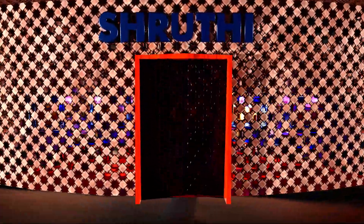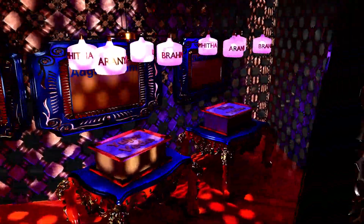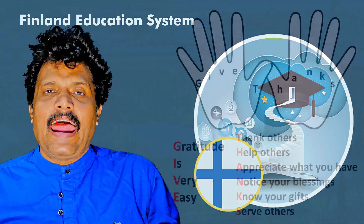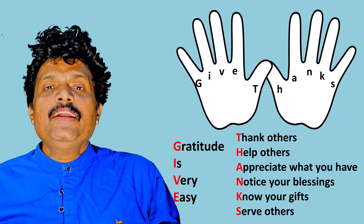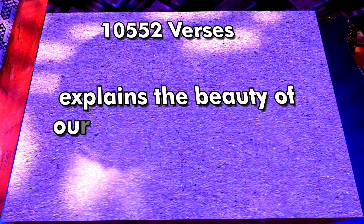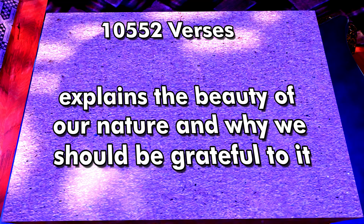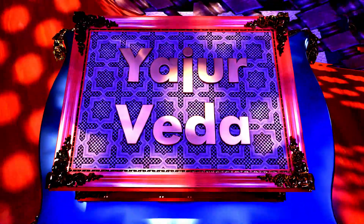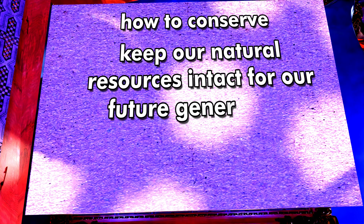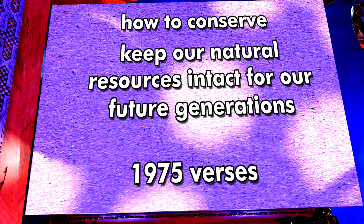The first part here is Shruti. It consists of four Vedas: Rig Veda, Yajur Veda, Sama Veda, and Atharva Veda. As we have understood from the Finland education system, education should start with gratitude — and this was not formulated by Finland. Finland got this idea from our knowledge system, the Rig Veda. Rig means appreciate, and it has 10,552 verses which explain the beauty of our nature and why we should be grateful to it. The second is Yajur Veda, where Yajur means conserve — it is also called worship. Here we are told how to conserve and keep our natural resources intact for future generations, and it has 1,975 verses.